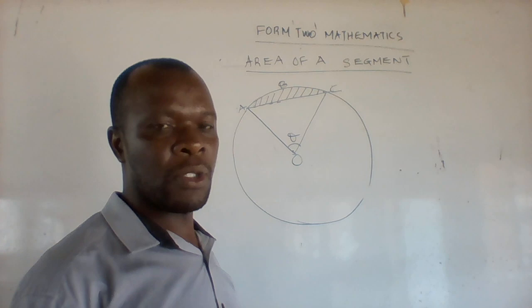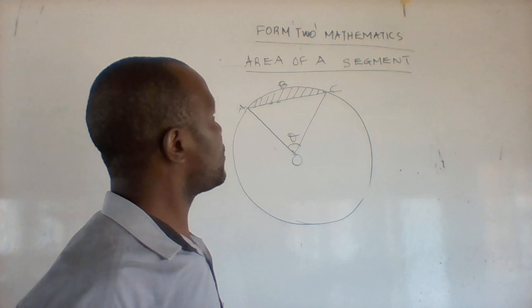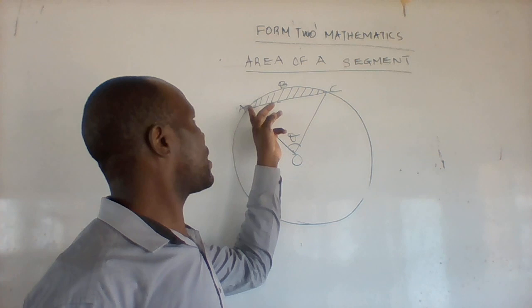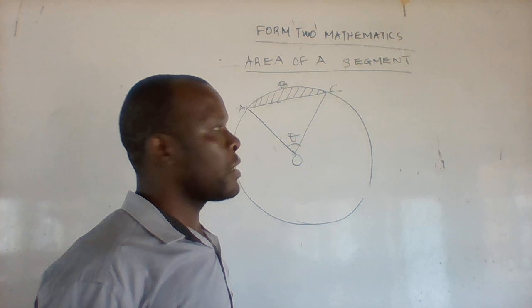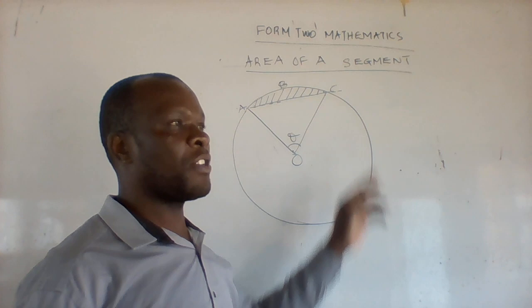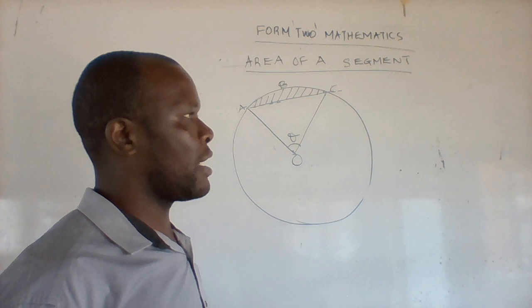Today we want to discuss how to calculate the area of a segment. By definition, a segment is an area bound by an arc — in this case arc ABC — and a chord AC. In general, a segment is a region bound by an arc and a chord. A chord is a line joining any two points on the circumference of a circle. Today we want to find out how the shaded region can be calculated.